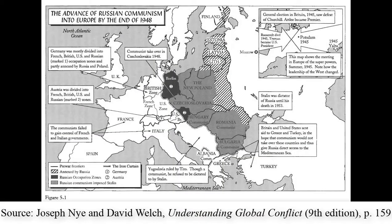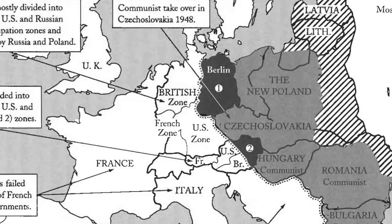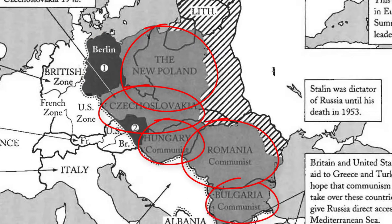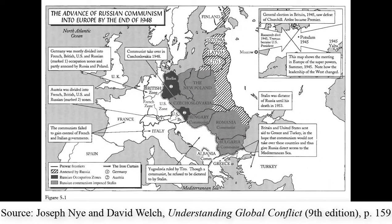Looking at Europe after the Second World War, you see how divided the continent really was. Not only is Germany divided between the three victorious powers and the French — who needed to be given something. The three occupational zones in the West — the US, British, and French — become West Germany. The Soviet occupational zone becomes East Germany for 45 years. Other countries — Poland, Czechoslovakia, Hungary, Romania, and Bulgaria — all fall under Soviet occupational spheres, whether through quisling communist governments or direct Red Army occupation, extending Soviet influence into Central Europe.